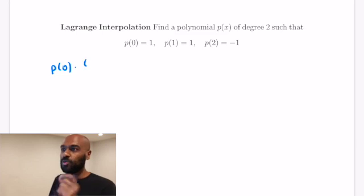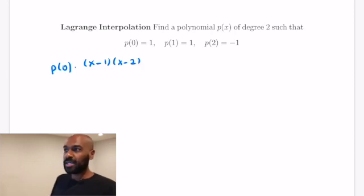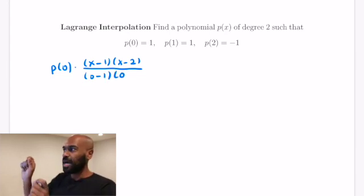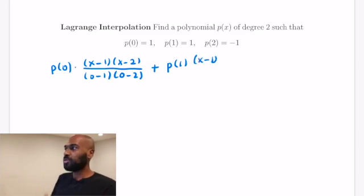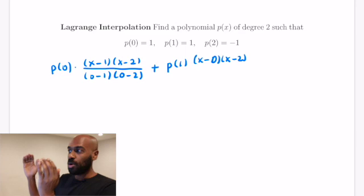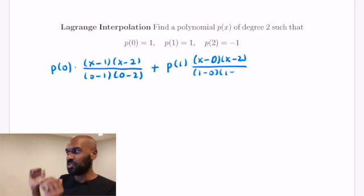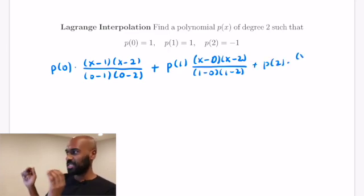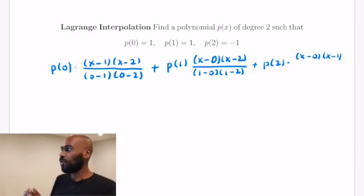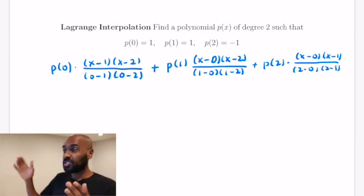The process is: write down P of 0 multiplied by the expression (x minus 1)(x minus 2) all divided by (0 minus 1)(0 minus 2). This is the variable x subtracted by the other input values 1 and 2, divided by the argument 0 minus those values. Then symmetrize by adding P of 1 times (x minus 0)(x minus 2) over (1 minus 0)(1 minus 2), and adding P of 2 times (x minus 0)(x minus 1) over (2 minus 0)(2 minus 1). This gives us a quadratic polynomial.